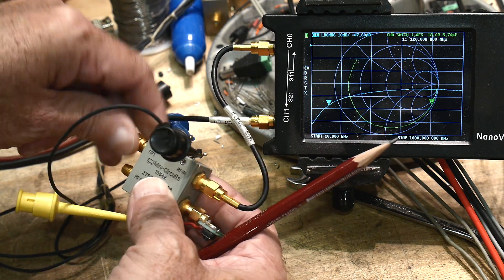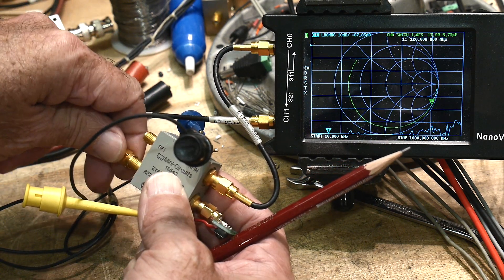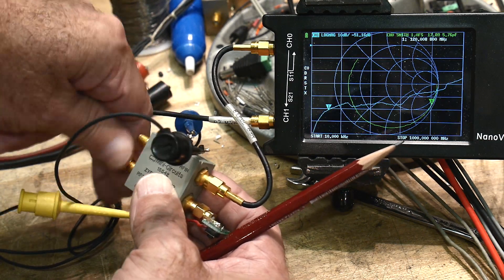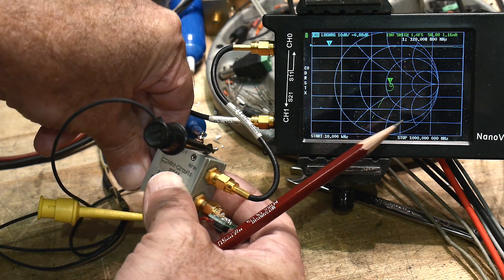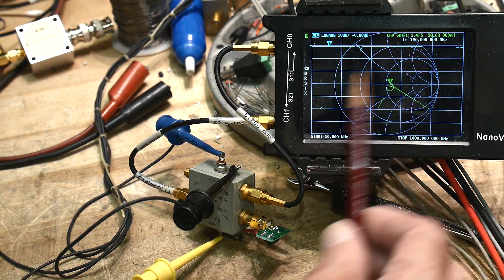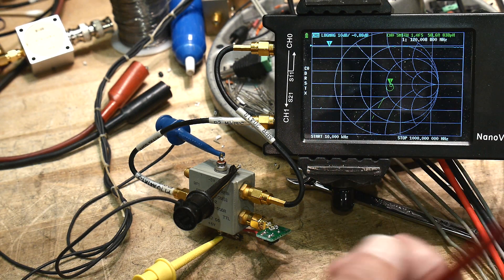So let's try out RF1. RF1 should be already connected. Yeah, there we go. And again, it's doing great. Again, 0.88 dB insertion loss.